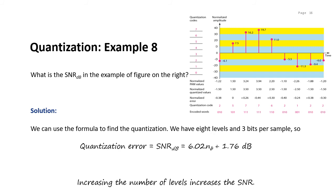The contribution of the quantization error to SNRDB depends on the number of quantization levels L or the bits per sample NB, as shown in the formula SNRDB = 6.02NB + 1.76 dB. In this particular example, we have 3 bits per sample, so NB = 3, giving SNRDB = 6.02 × 3 + 1.76 = 19.82 dB. As we increase the number of levels, the SNR increases.